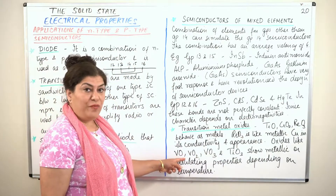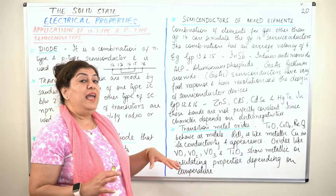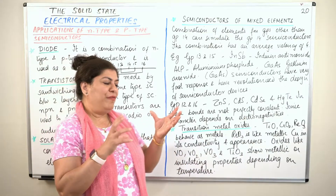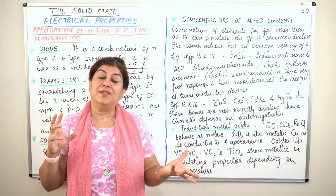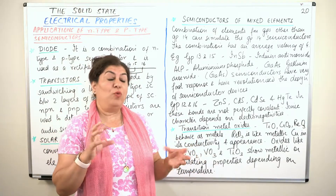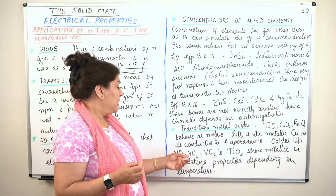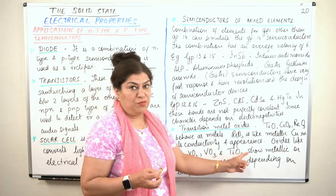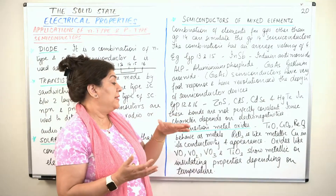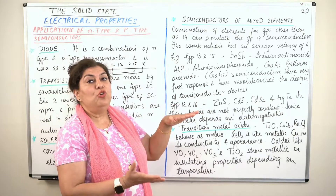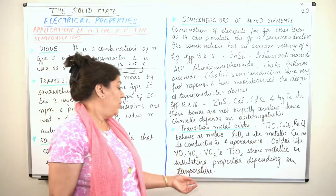Then you have oxides like vanadium oxide (VO), vanadium dioxide (VO2), vanadium trioxide (V2O3), and titanium trioxide — all of these fall between conductivity and insulation. They can be conductors or insulators under different conditions depending on temperature. They can act as metallic conductors at certain temperatures and as absolute insulators at lower temperatures, so their conduction properties depend on temperature.